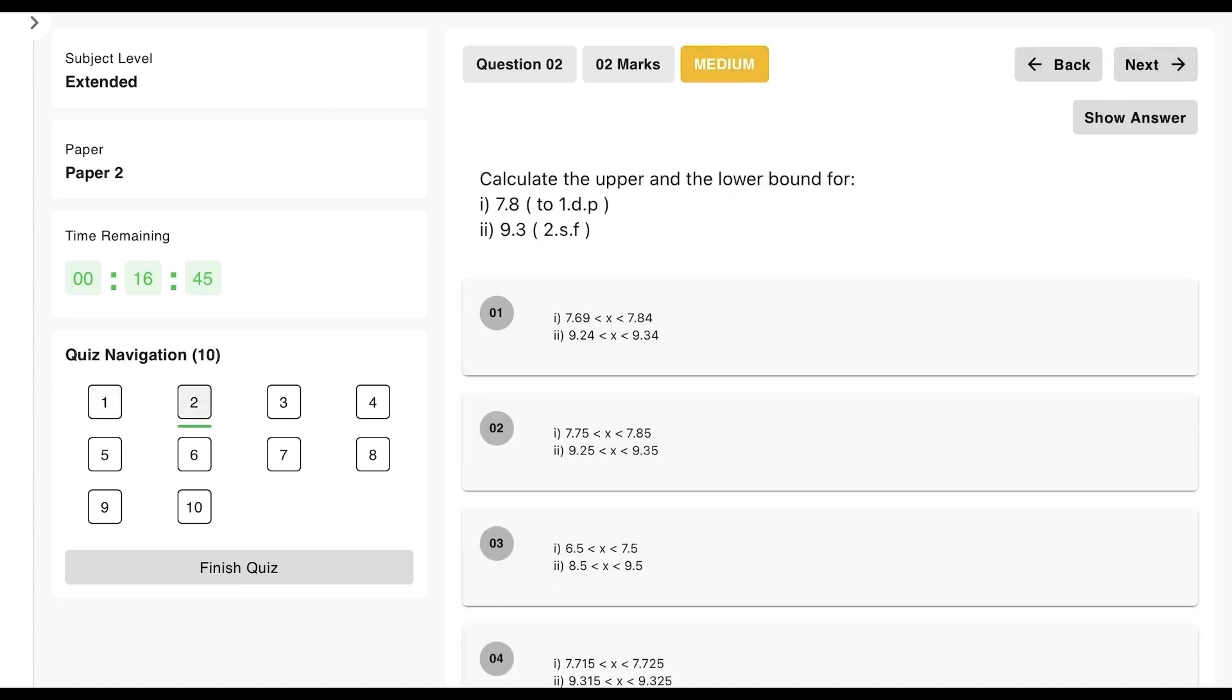Moving on, calculate the upper and the lower bound for 7.8 to one decimal place and 9.3 to two significant figures. So firstly, 7.8 to 1 decimal place. If I want to round to 7.8 as one decimal place answer, then the lower bound should be 7.75 because this 5 will round up and get me the 8. At the same time, the upper bound should be 7.85, then only it'll round the other way and come to 7.8. So anything lower than 7.85 should round down to come to 7.8.